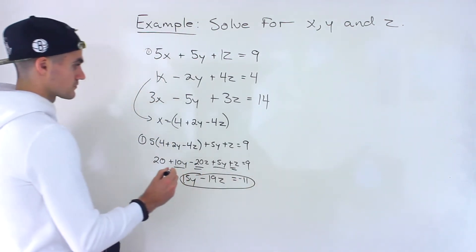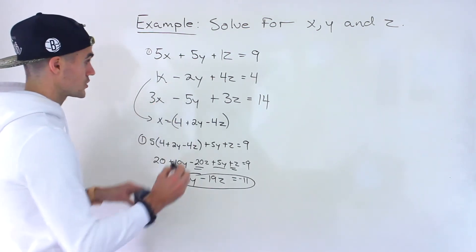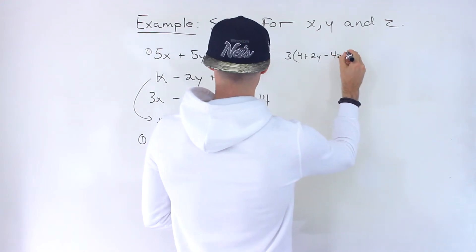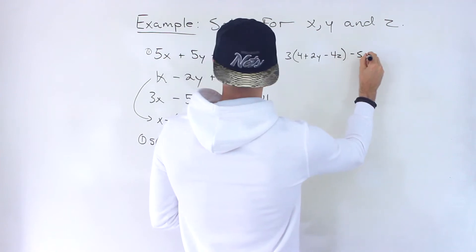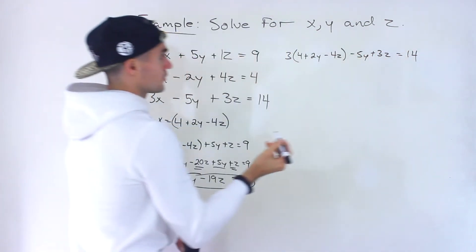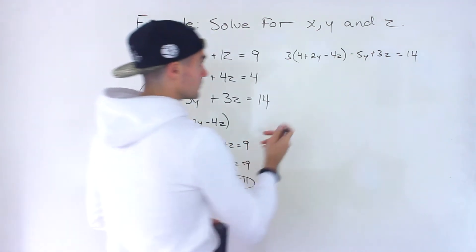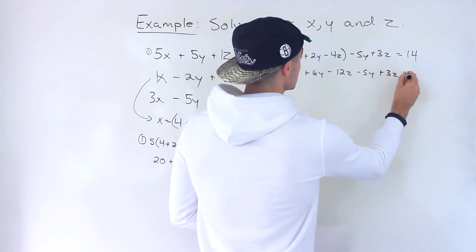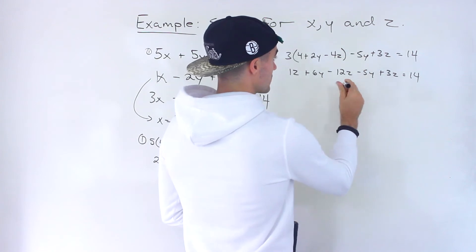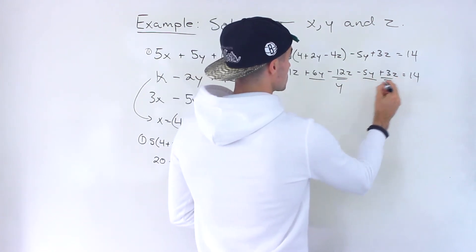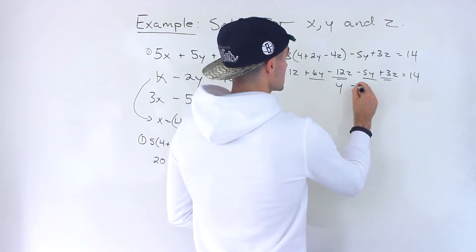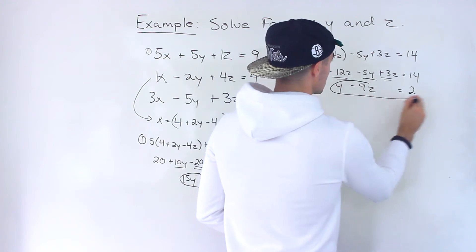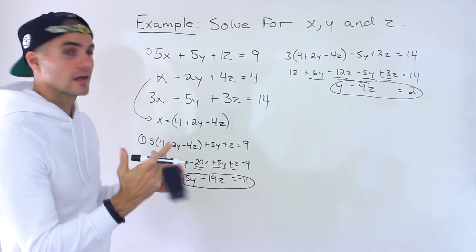Plugging into the third equation: 3 times (4 plus 2y minus 4z) minus 5y plus 3z equals 14. Expanding: 12 plus 6y minus 12z minus 5y plus 3z equals 14. Combining like terms carefully: 6y minus 5y gives y, and negative 12z plus 3z gives minus 9z. Bringing the 12 over: y minus 9z equals 2. So now we have two equations and two unknowns.